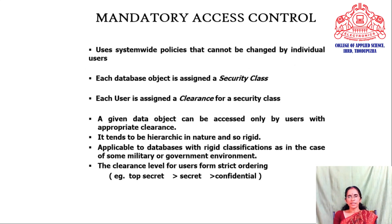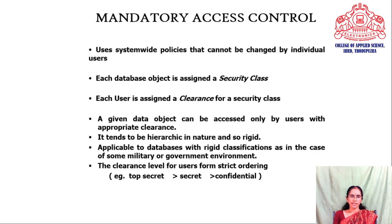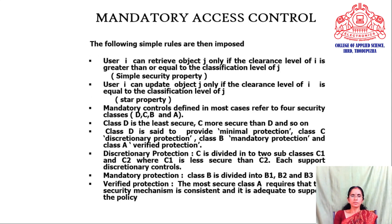The second approach is mandatory access control. It uses a system-wide policy that cannot be changed by individual users. Each database object is assigned a security class and each user is assigned a clearance for a security class. A given data object can be accessed only by users with an appropriate clearance level. Mandatory access control tends to be hierarchic in nature and very rigid, making it applicable to databases with rigid classifications such as military or government environments. Clearance levels form a strict ordering: for example, top secret, then secret, then confidential. The rule imposed is: user i can retrieve object j only if the clearance level of i is greater than or equal to the classification level of j.